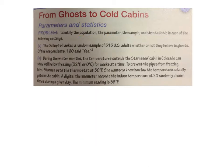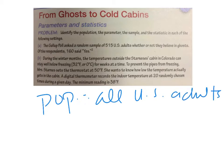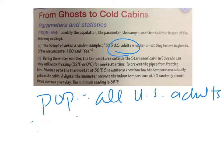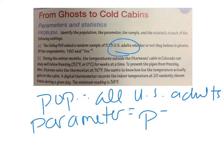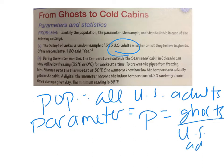My population for this is all U.S. adults, because that's what we're trying to apply the statistic to and that's where our sample came from. My parameter is the true proportion — p — the true proportion of U.S. adults that believe in ghosts, which is the number who believe divided by all U.S. adults.